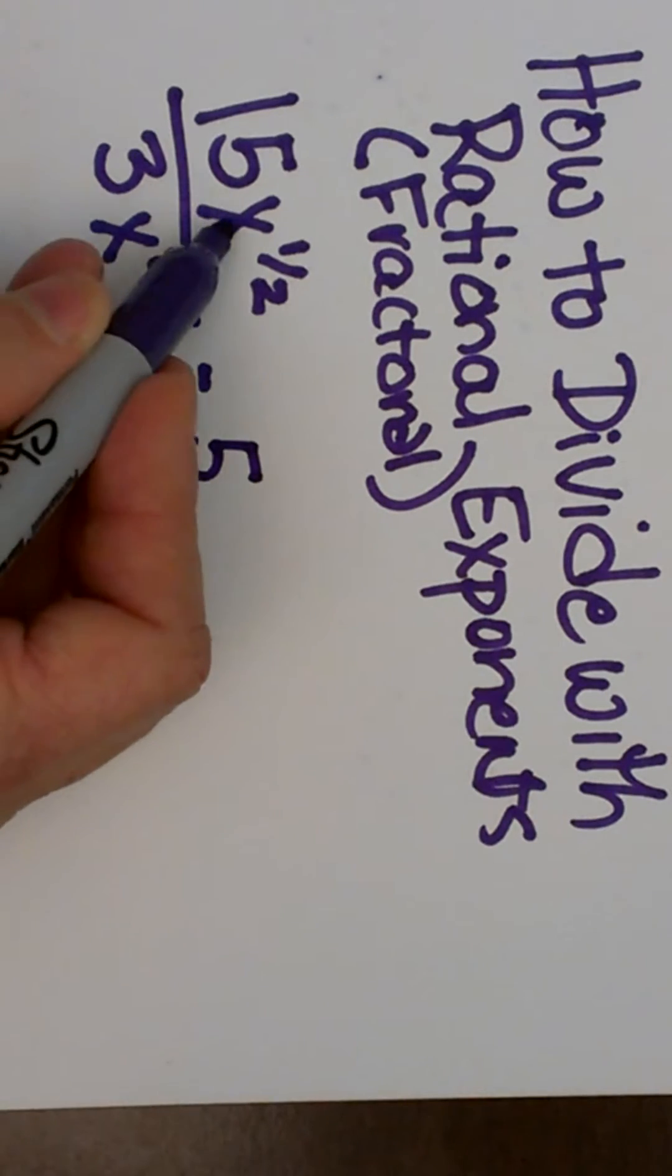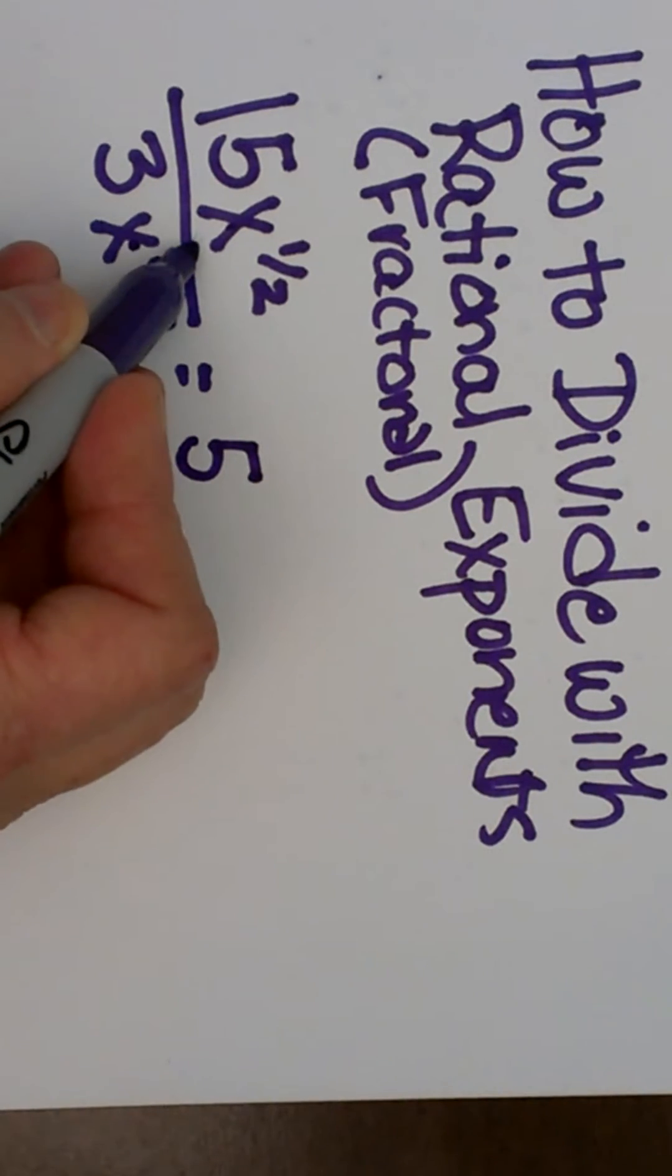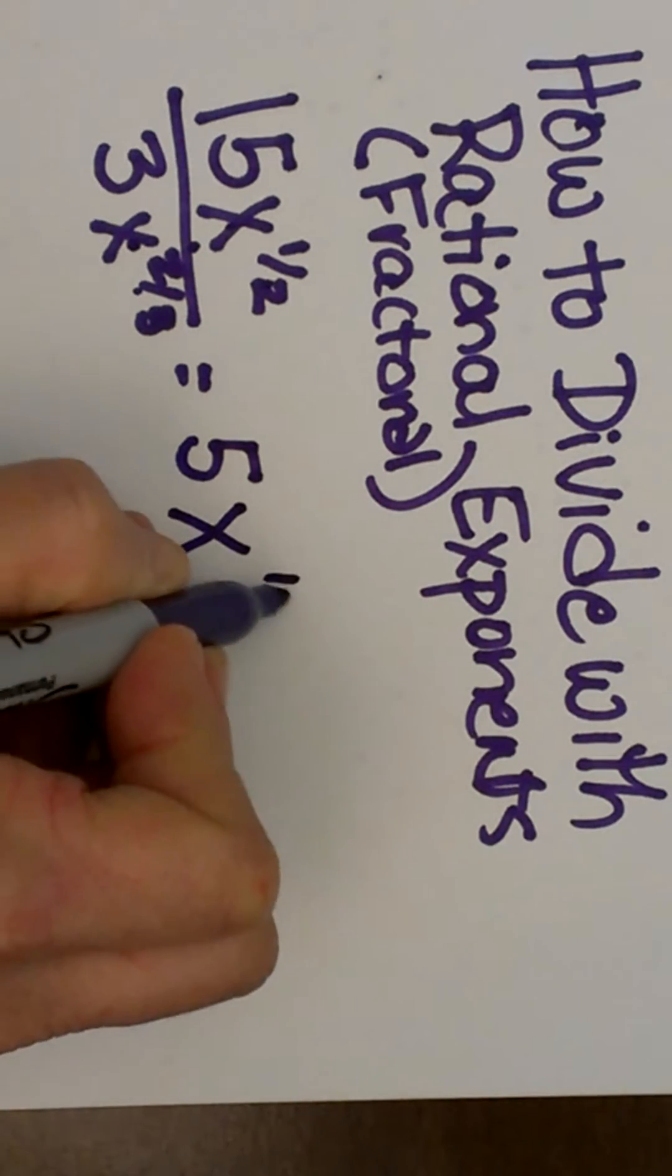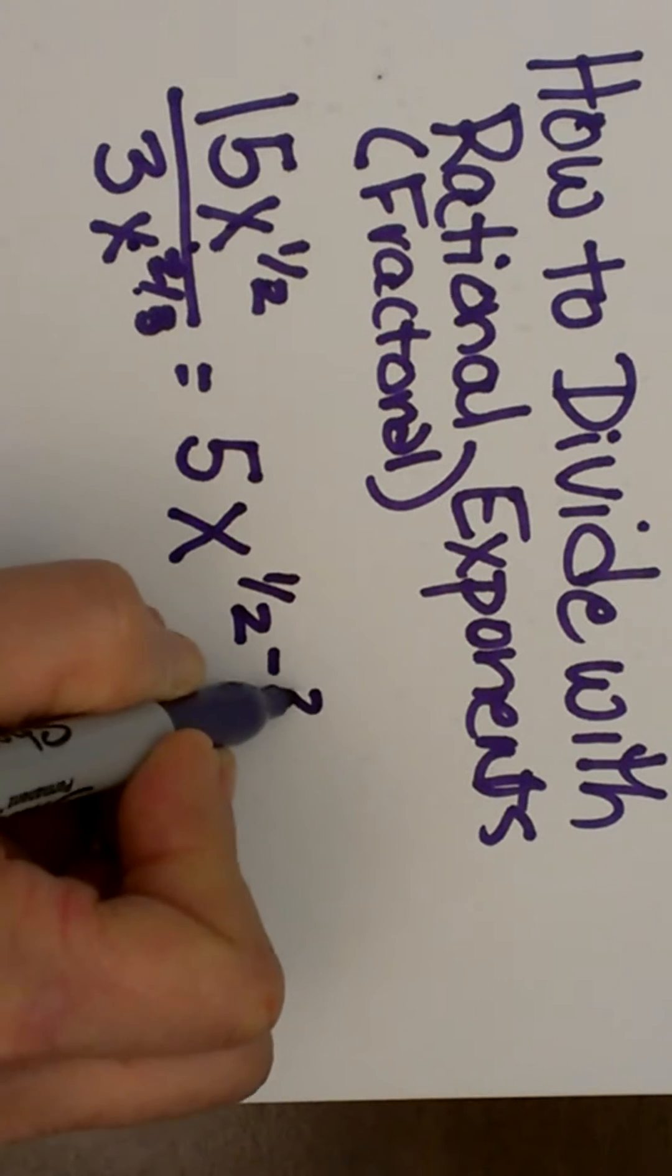But with the exponents, when you have like bases and you are dividing, you are going to subtract the exponents. That is the rule. So we are going to have x to the 1/2 minus 2/3.